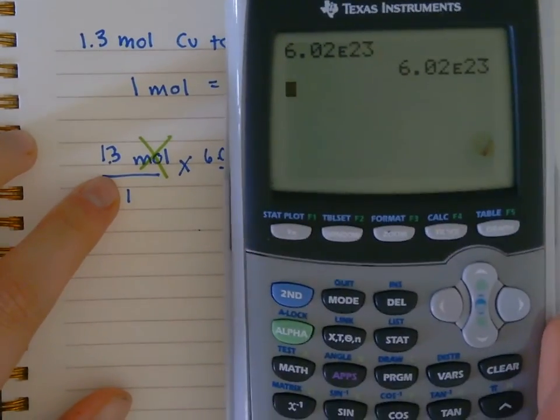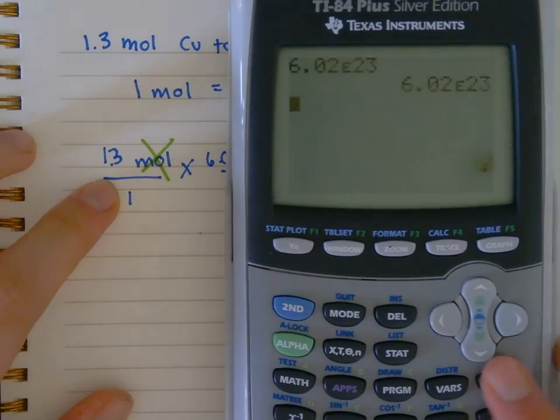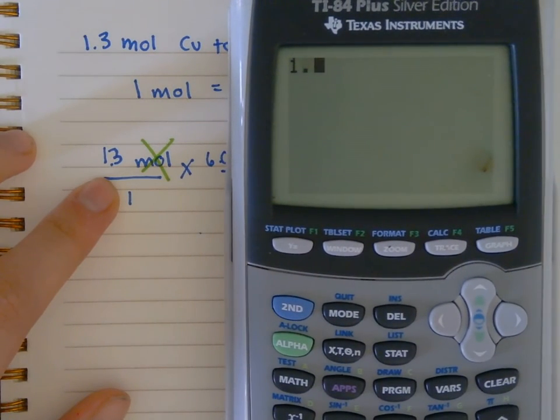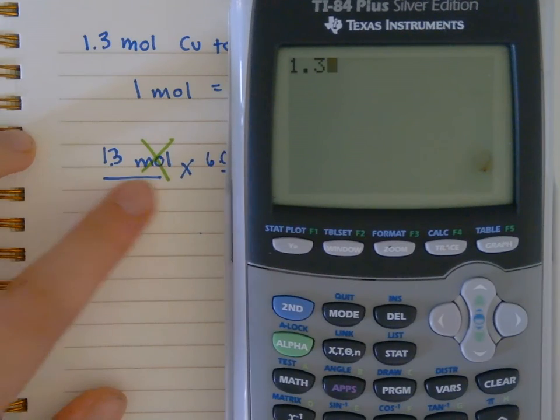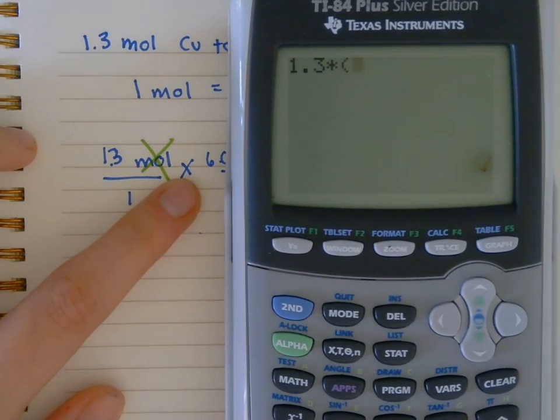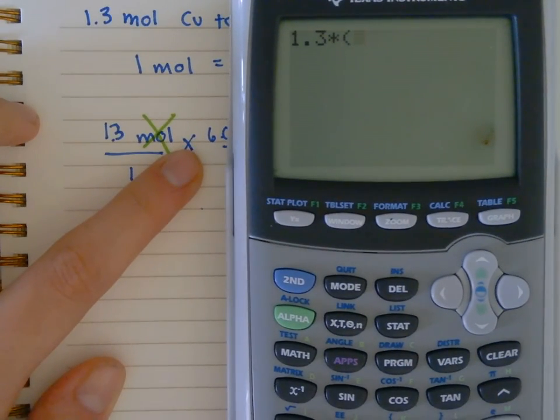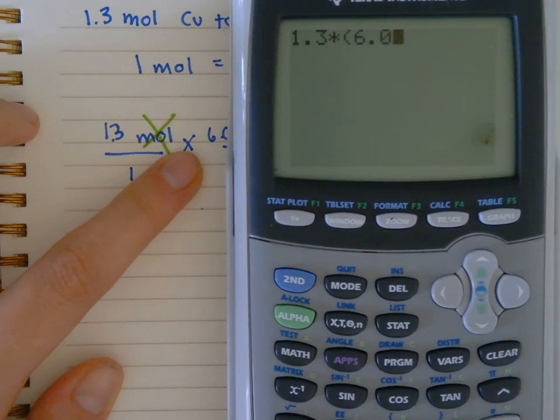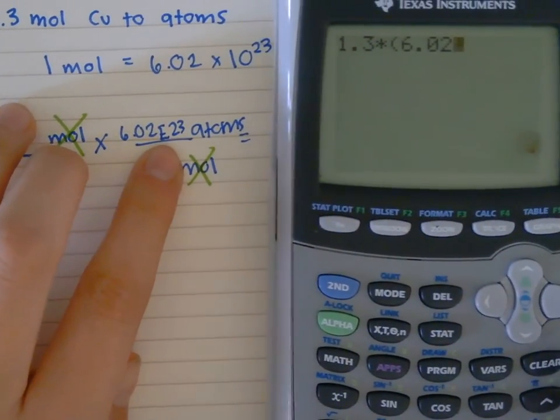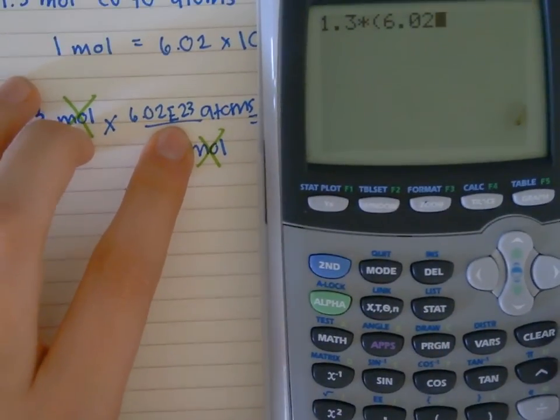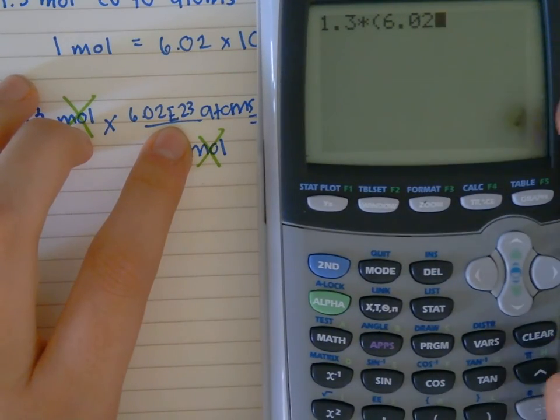I need a calculator for this. I have 1.3 times, and I'm going to put parentheses, 6.02, and then times 10. On your calculator, if you have this type of calculator, you can put second e. So you see second e, that means times 10 to the 23rd.